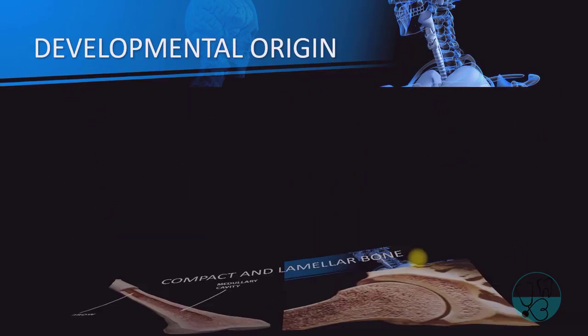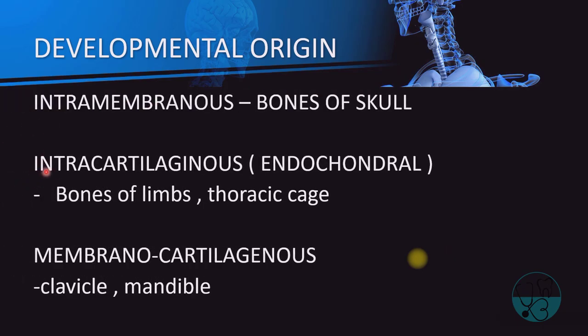In the developmental classification, there are three basic types. Intramembranous bones develop from within a network of fibrous membrane — from direct transformation of condensed mesenchyme to bone; examples are skull bones. Intracartilaginous bones develop from embryonal hyaline cartilages; examples are all long bones except the clavicle. Membranocartilaginous bones are partially derived from membrane or mesenchymal condensation and partially from cartilage; an example is the mandible, which is an important point especially for dental students.